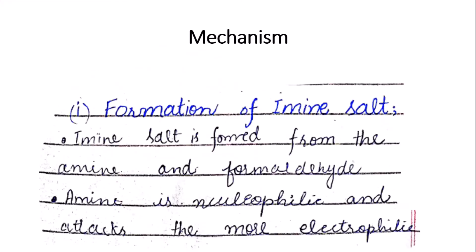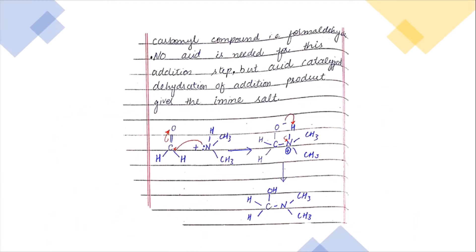If we look at the mechanism of this reaction, in the first step there is the formation of an amine salt. The amine is a nucleophile and attacks the more electrophilic carbonyl compound. As you can see here, the amine nitrogen attacks the more electrophilic carbon of formaldehyde, and the electrons transfer to the oxygen. In the next addition step, acid is not required.